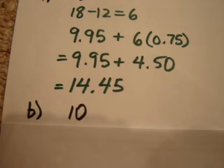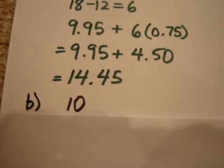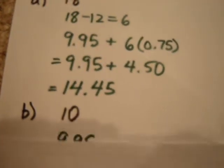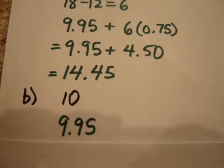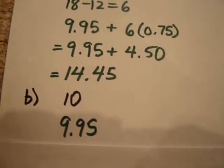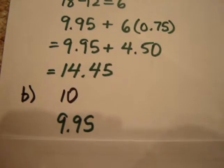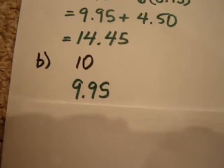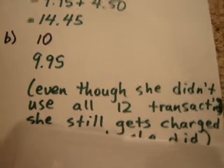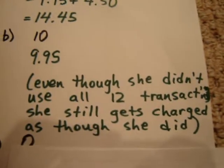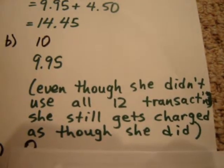What if Eleanor only made 10 transactions? Well, that's easy. She gets charged $9.95. Even though she didn't make the full 12 transactions, she still gets charged $9.95. Even though she didn't use all 12 transactions, she still gets charged as though she did.